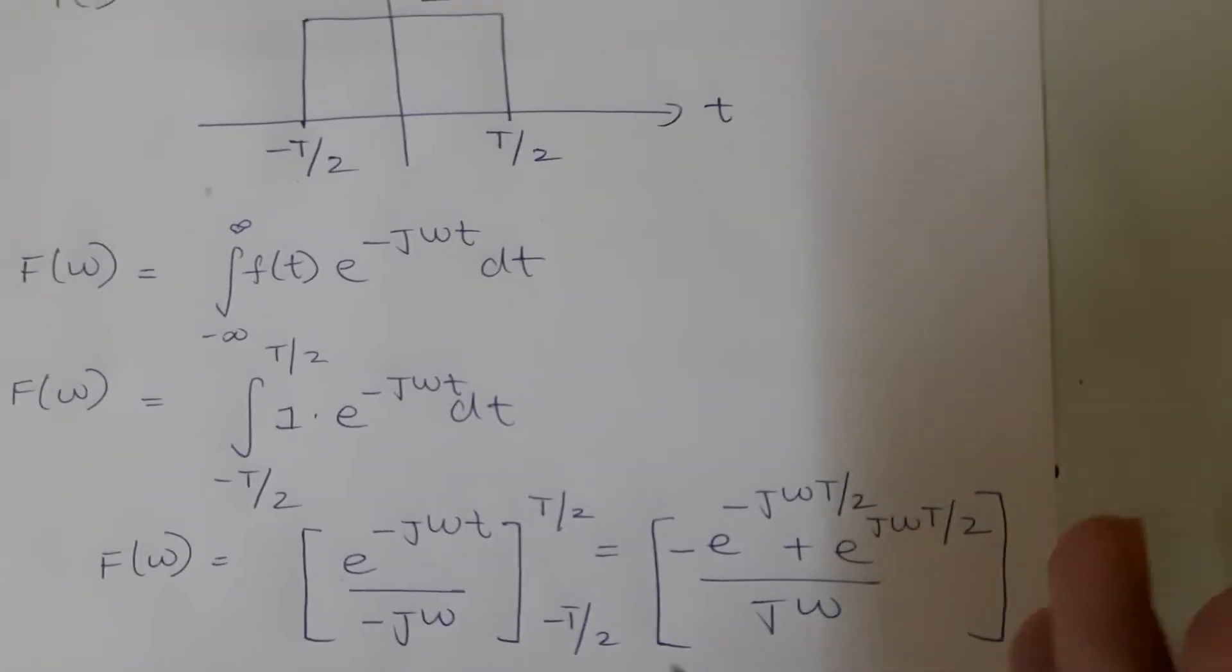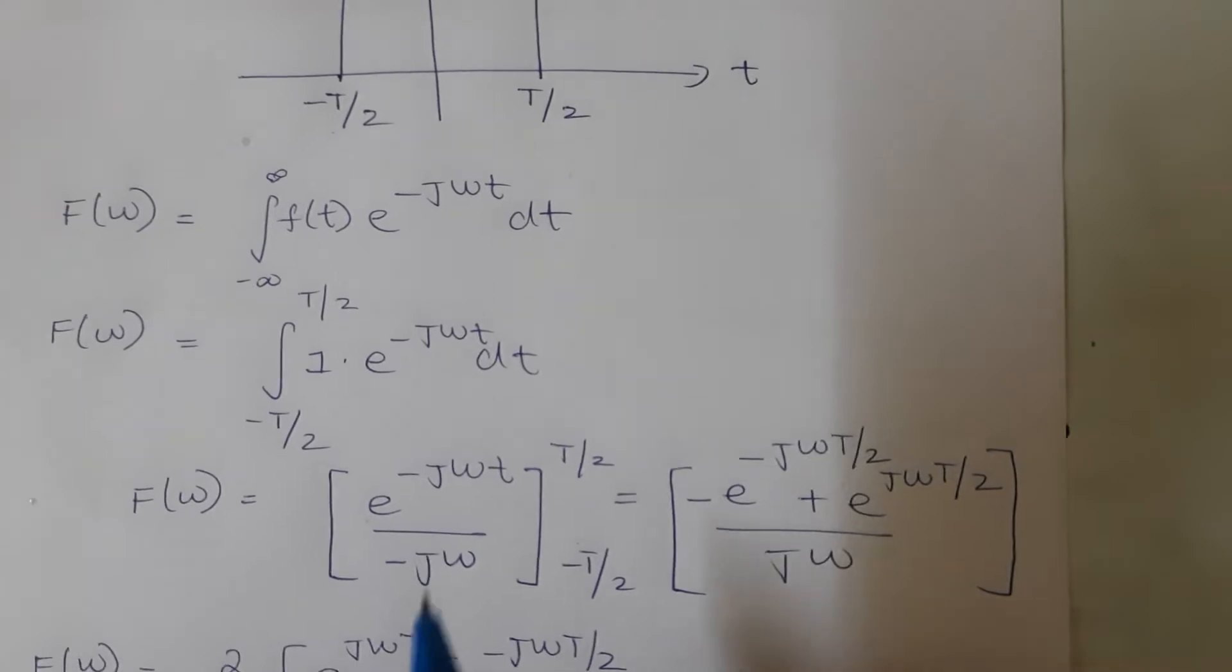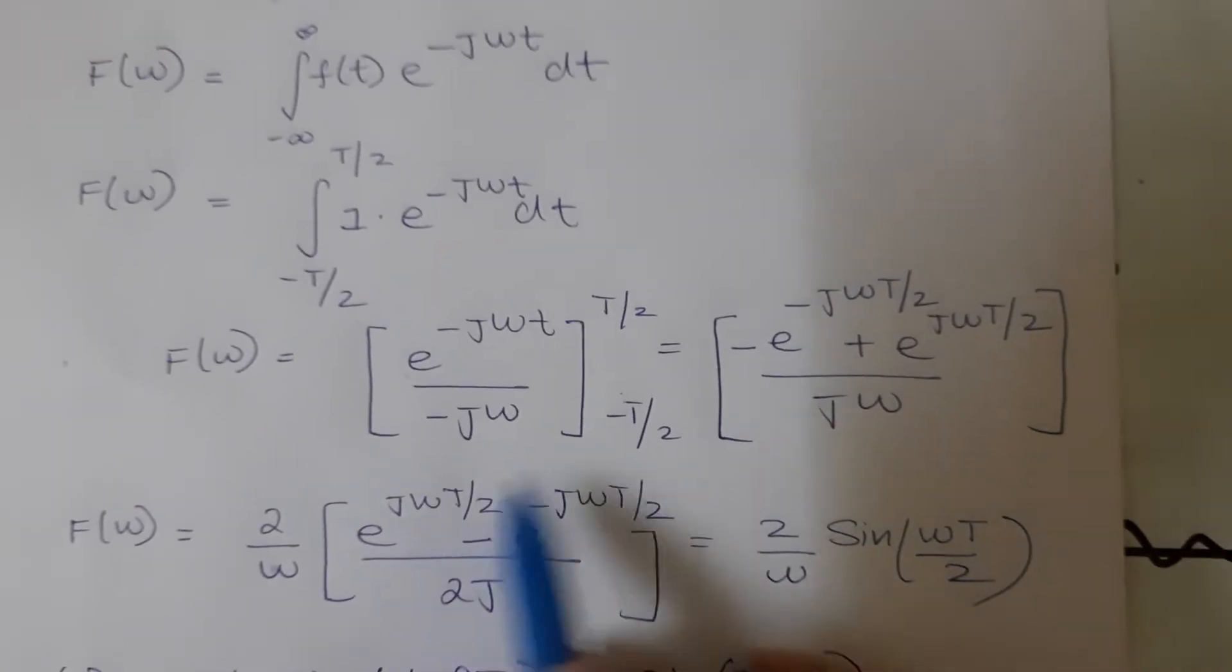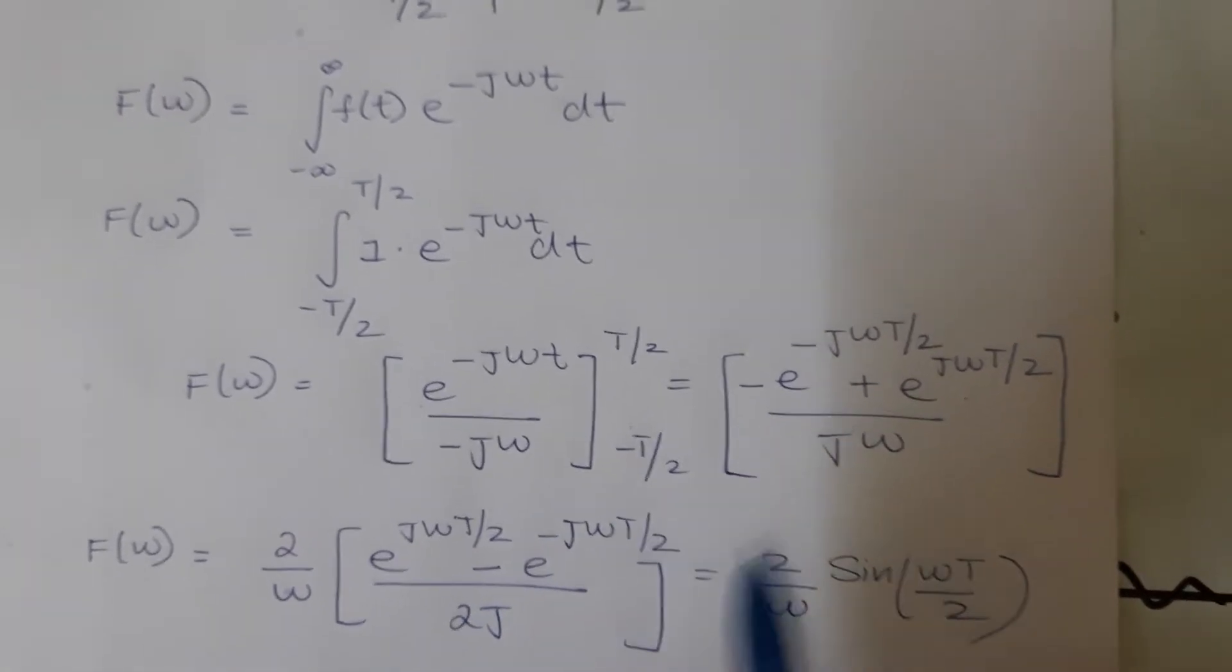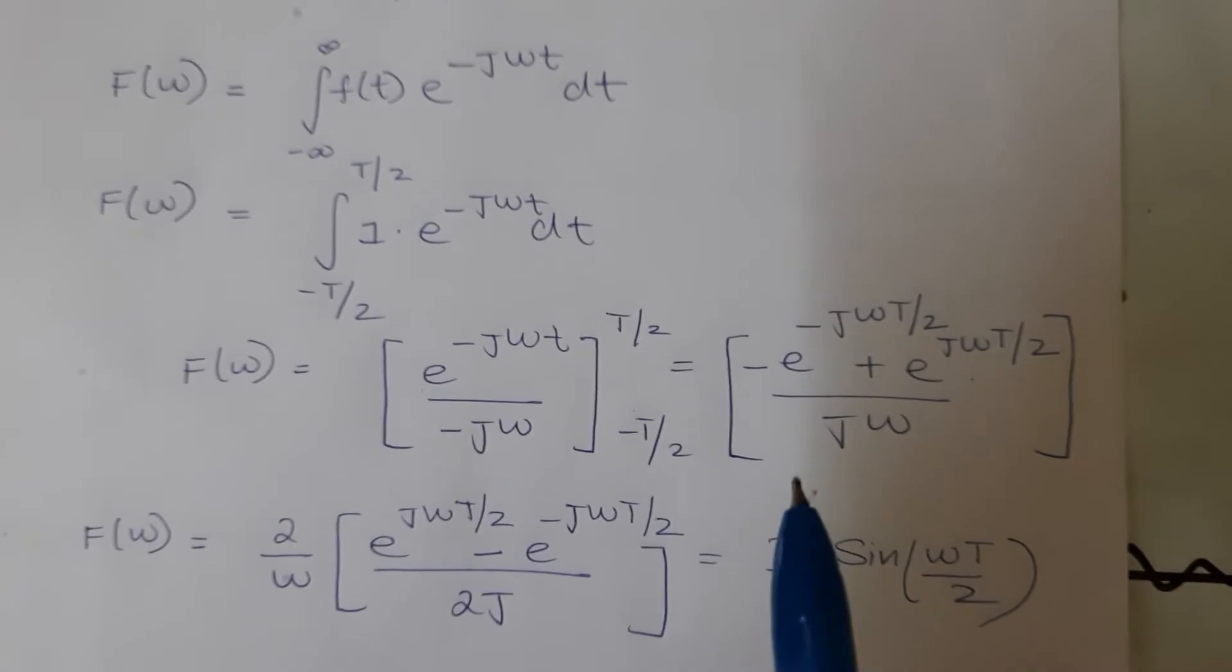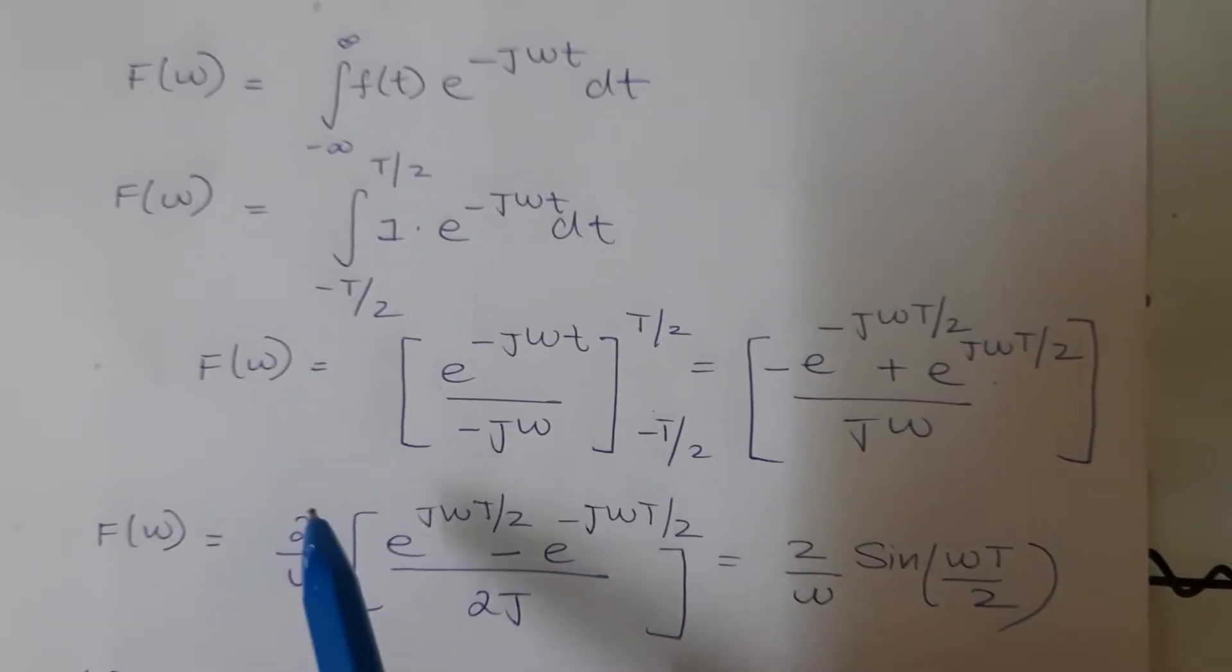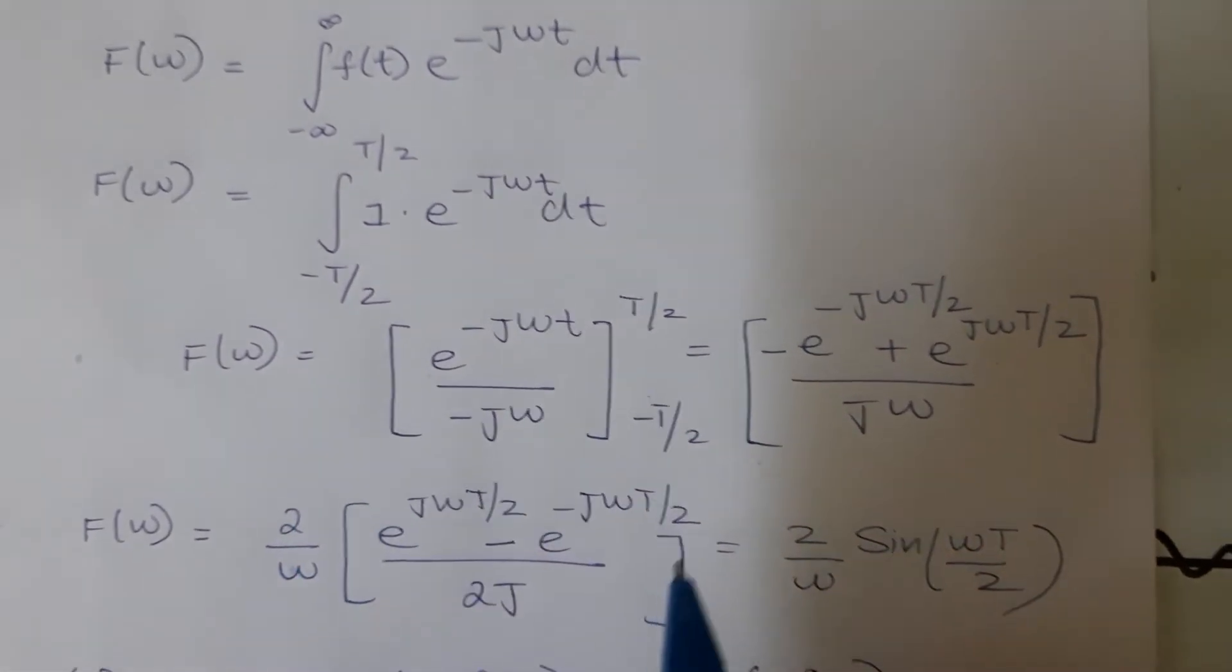Now if I rewrite this equation as e to the power of j omega tau by 2 minus e to the power of minus j omega tau by 2 by j omega. If I multiply and divide by 2 I can see that I get a similar function.